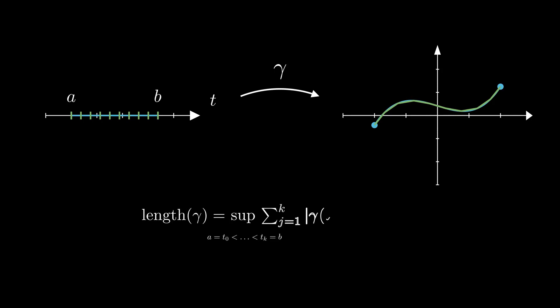We define the length of the curve as the limit of the lengths of these broken lines, or equivalently the supremum of the lengths of such broken lines with respect to all partitions. We will proceed by studying the basic properties of this definition.